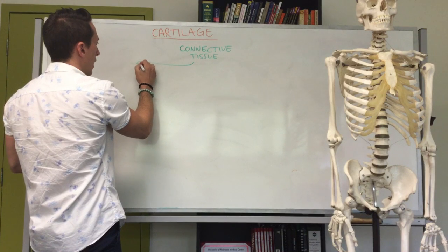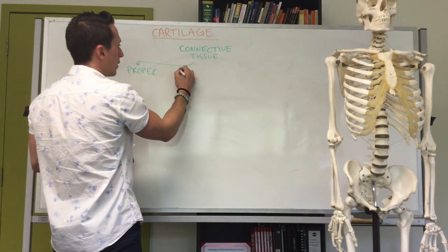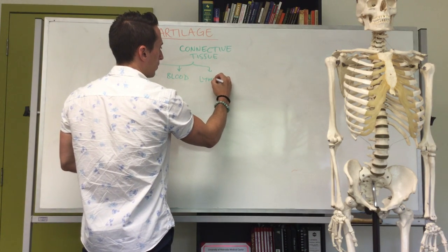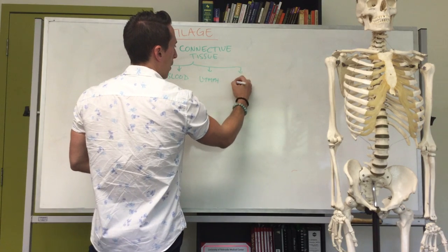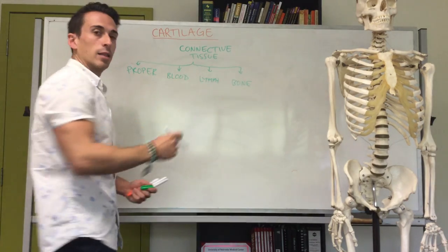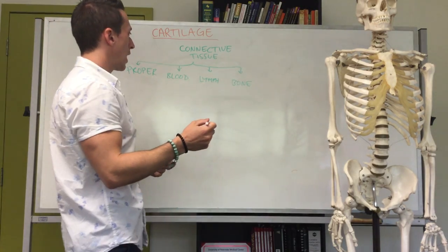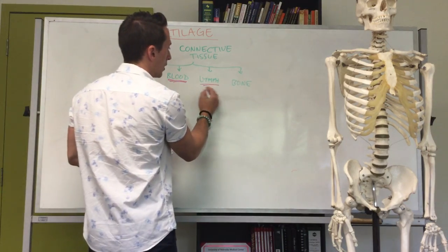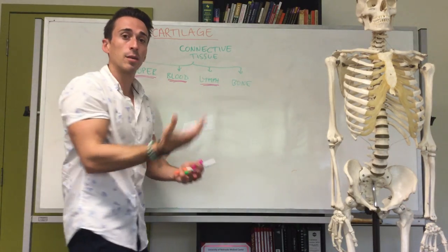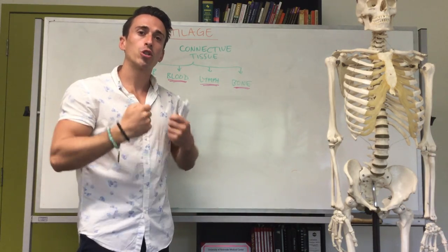There are different types of connective tissue. You can have connective tissue proper, blood, lymph, bone, and the focus of today — cartilage. All of these are different types of connective tissue. Some are fluids such as blood and lymph, some are semi-solids like connective tissue proper and cartilage, and some are solids like bone itself.